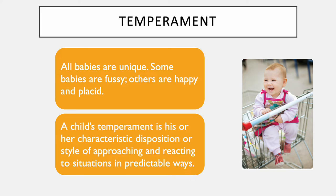Every baby is unique and has its own temperament, which is the style of approaching and reacting to situations. Some babies are fussy, others are happy and placid. A child's temperament is his or her characteristic disposition or style of approaching and reacting to situations in predictable ways. Unlike emotions which can change, temperament is relatively stable. It's related to a person's basic biological makeup and forms the core of the developing personality.